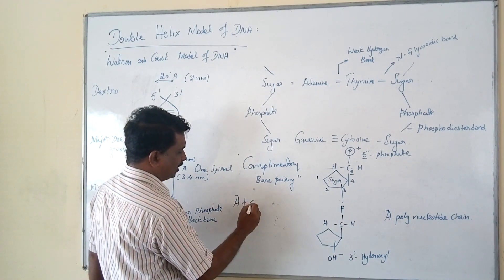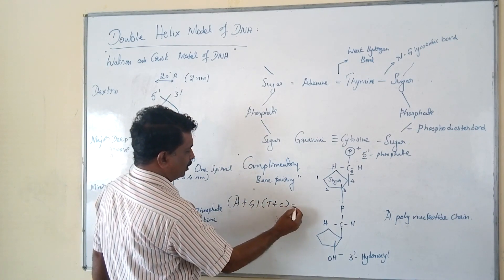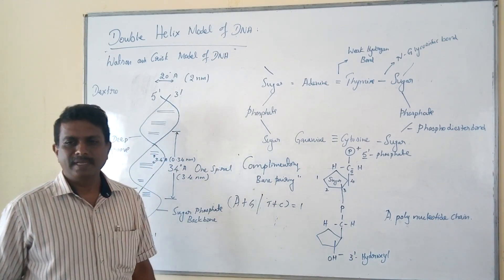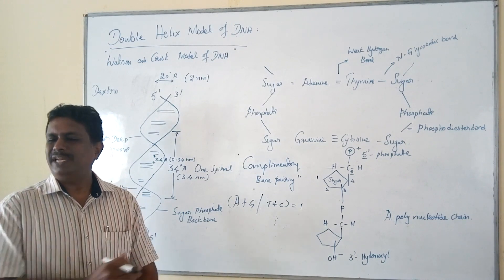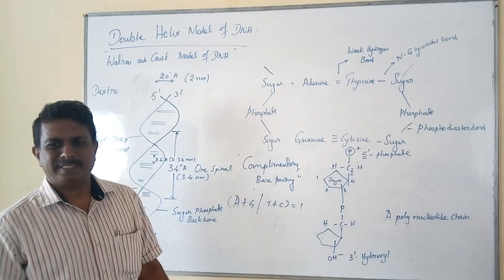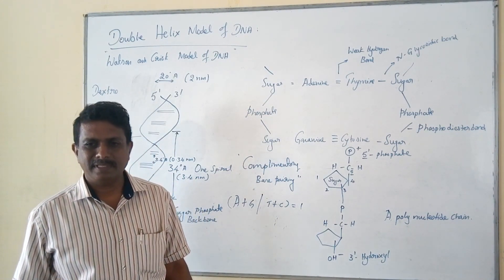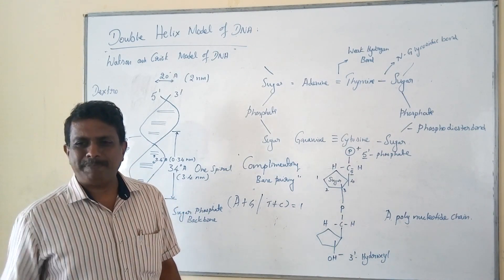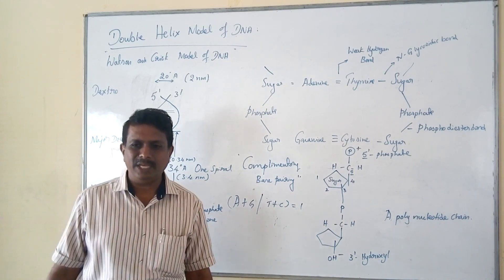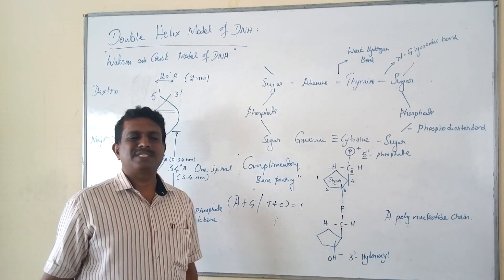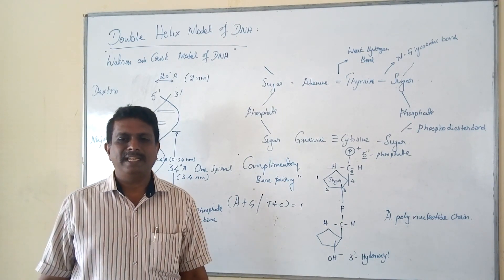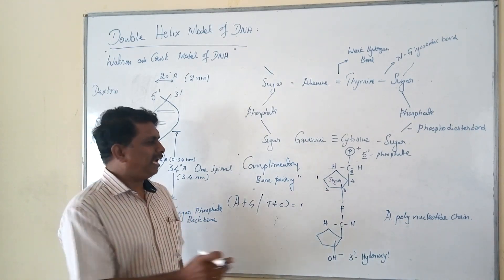Adenine plus guanine divided by thymine plus cytosine is equal to 1. This value remains constant for all species. The deoxyribose sugar and the amount of phosphate group occur in both polynucleotide strands in equimolar proportion. This unique law is called Chargaff's rule of base equivalence, put forward in the year 1948.